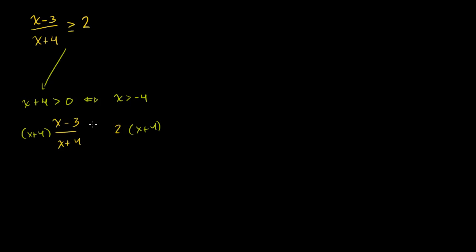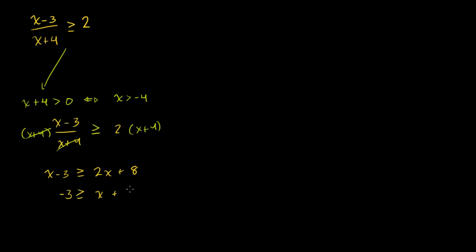We're multiplying both sides by a positive, so the inequality stays the same as in our original problem. The x plus 4 terms cancel out, and then we have 2 times x plus 4. We get x minus 3 is greater than or equal to 2 times x plus 2 times 4, which is 8. Now what can we do? We can subtract x from both sides. We get minus 3 is greater than or equal to x plus 8.